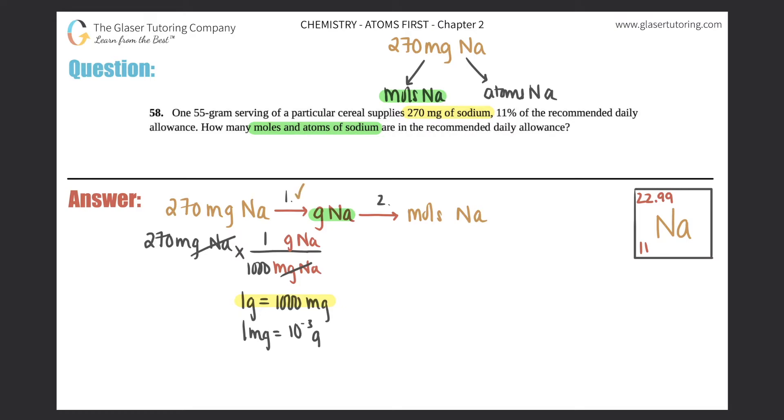So this part is done, but now we need the second part. We need to go to grams of sodium to moles of sodium. So times that by ratio, grams of sodium on the bottom, moles of sodium on top.